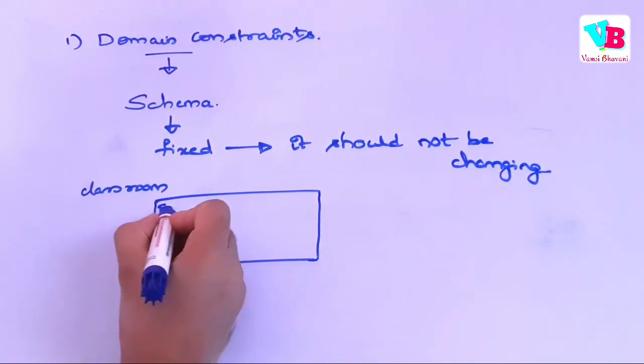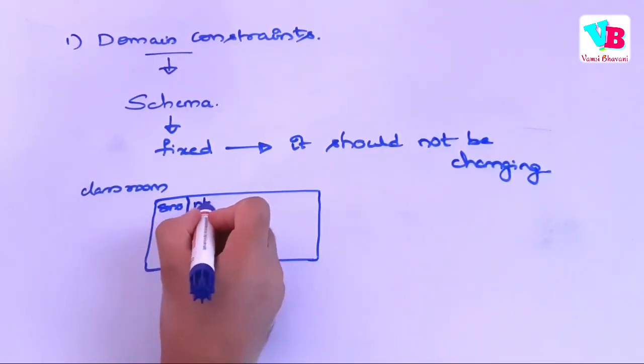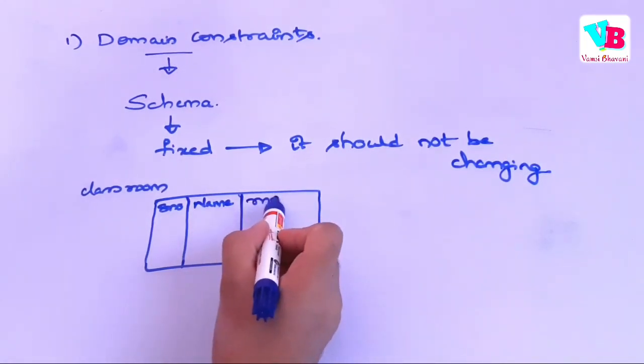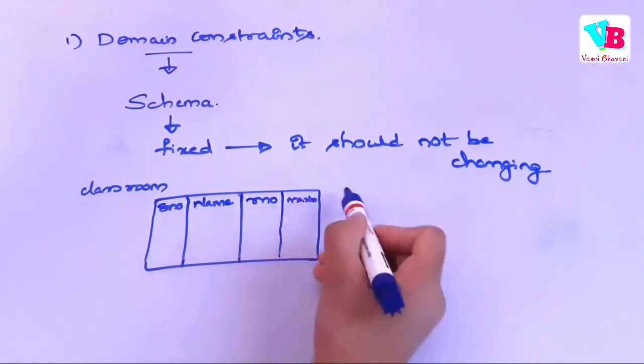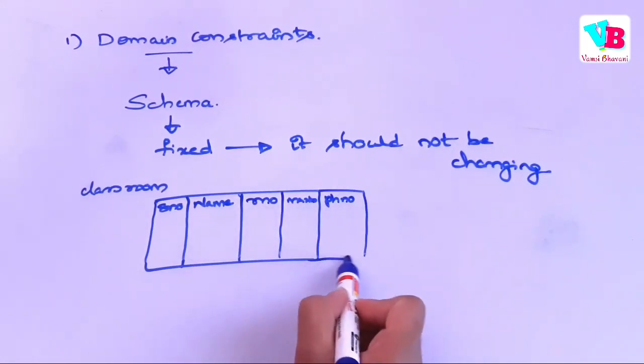Now, what we can have? Serial number hundi chhu. Name. Then, what do we have? Role number, marks, phone number, whatever.